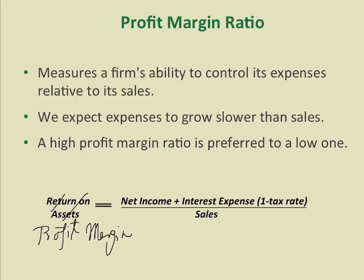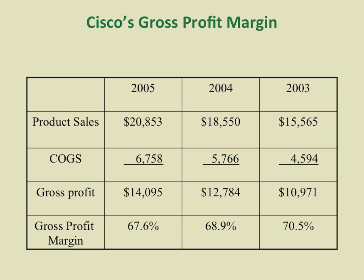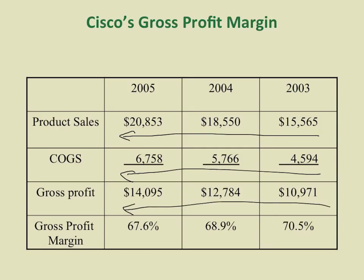If you can control your costs, you can squeeze more returns out of your sales. We expect expenses to grow slower than sales, so a high profit margin ratio is preferred. Looking at a gross profit margin analysis for Cisco from 2003 to 2005: sales revenue increased, cost of goods sold increased, gross profit in raw numbers increased, but gross profit margin as a percentage decreased. The reason is that the increase in cost of goods sold outpaced the sales increase, indicating a cost control issue.